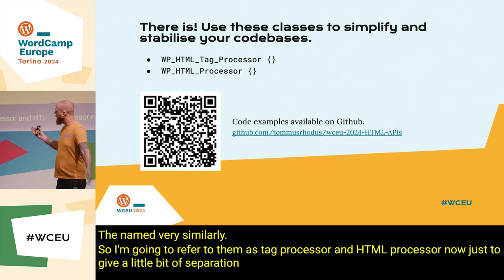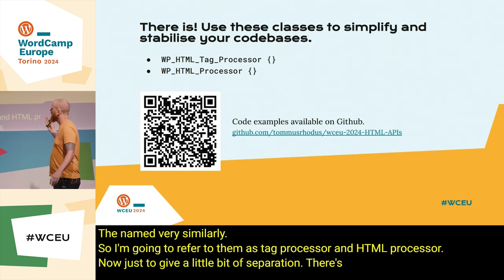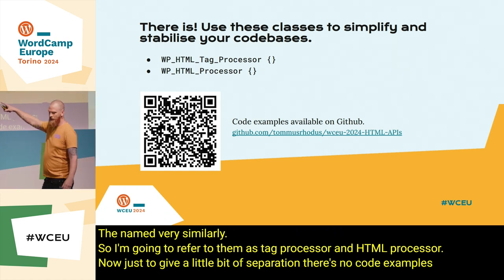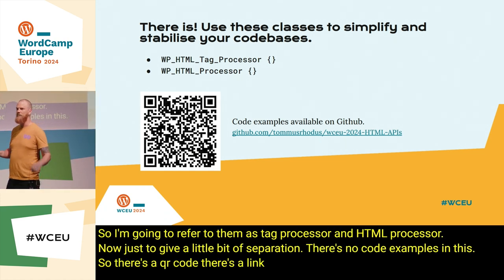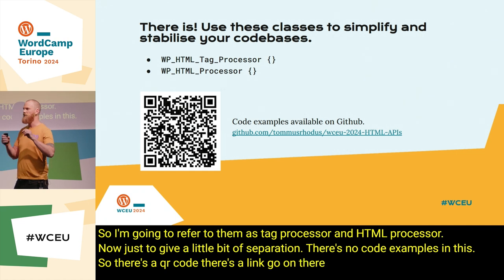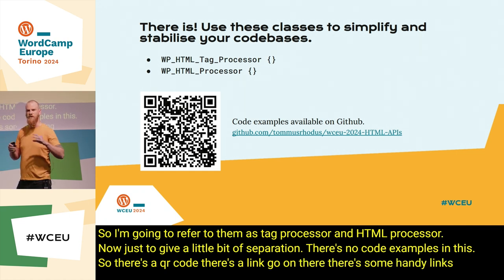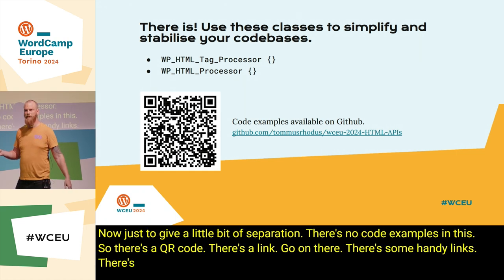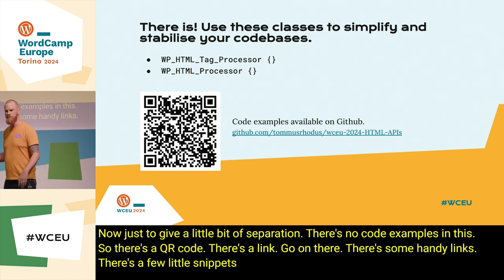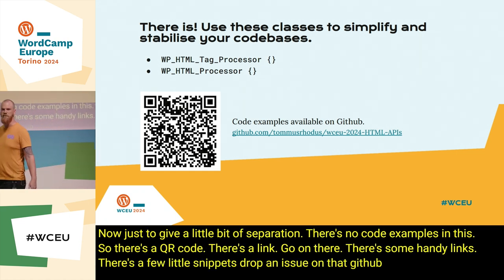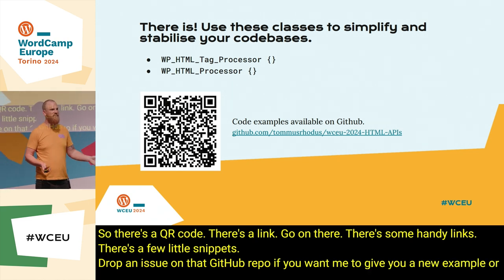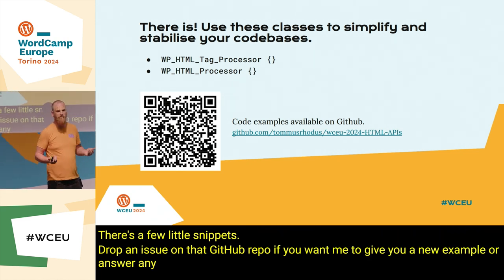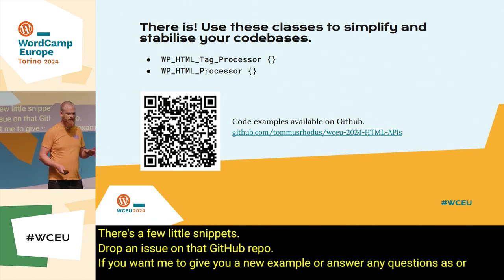There are no code examples in this talk, so there's a QR code and a link. Go on there — there are some handy links and a few little snippets. Drop an issue on that GitHub repo if you want me to give you a new example or answer any questions, or you can just come speak to me. I'm reasonably friendly.